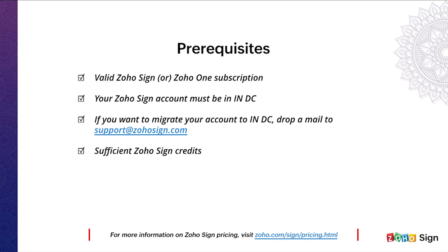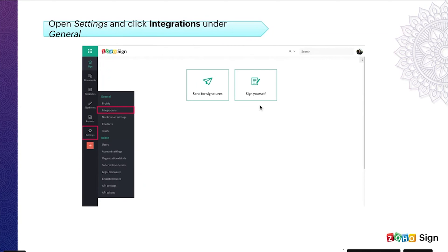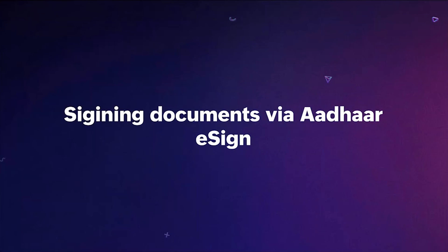If you aren't in the Indian data center, you can drop a mail to support at zohosign.com and our team will help you. Another important point: ensure that you have sufficient Zoho Sign credits while trying out these integrations. You can click the pricing link to know more about credit consumption. Now let's see how to enable Aadhaar eSign. From your Zoho Sign dashboard, click Settings in the left navigation pane and click Integrations. This brings you to the integrations page — just turn the slider to on and you have enabled the integration.